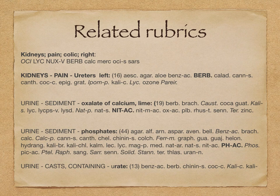Now the related rubrics. In our modern repertories and also in the basic repertories like Kent, Boger, Boninghausen, etc., we get the rubric: Kidney, pain, colic, right. Osimum Canum is the most important remedy, followed by Lycopodium, Nux vomica, Berberis vulgaris, etc.